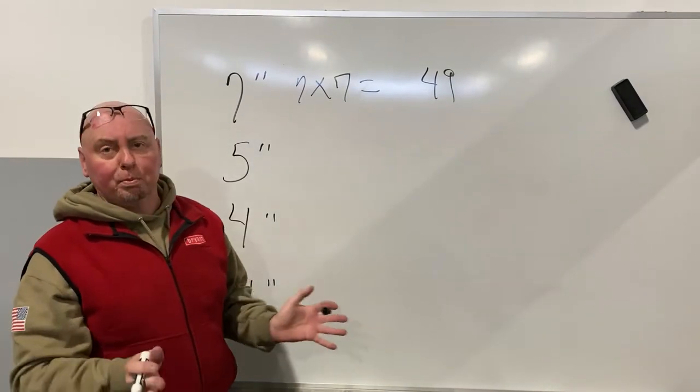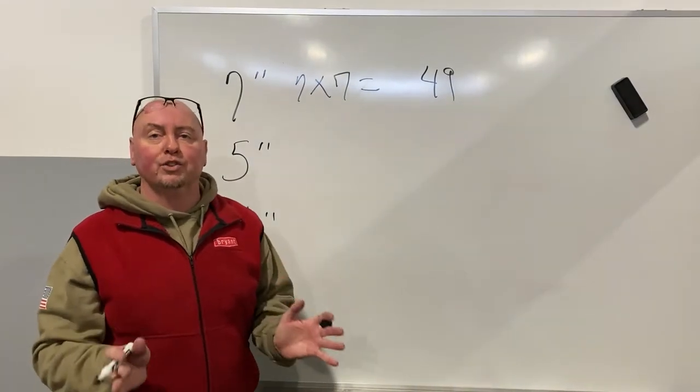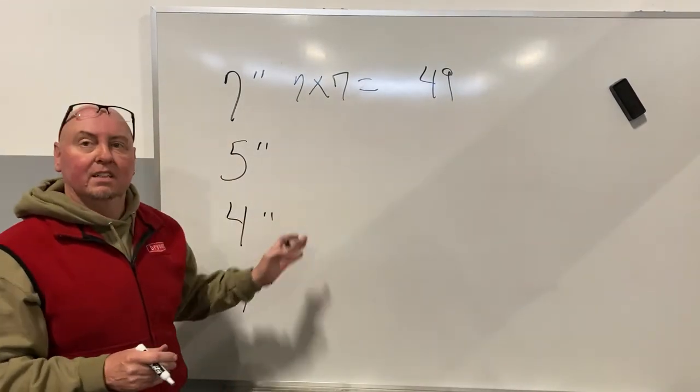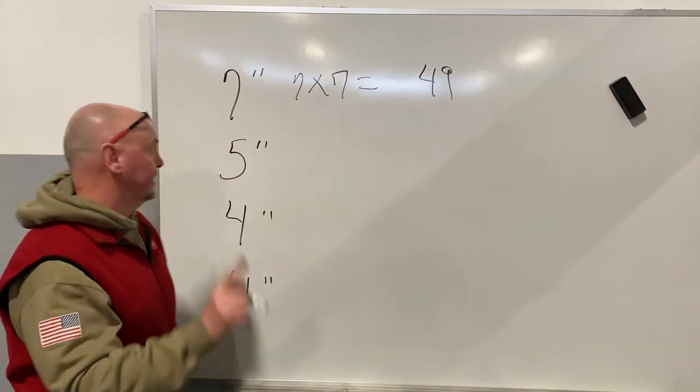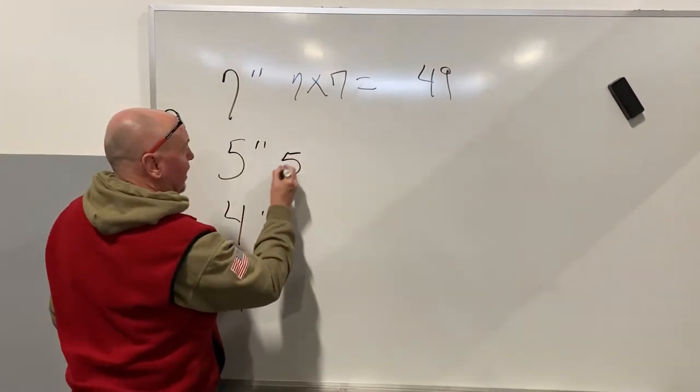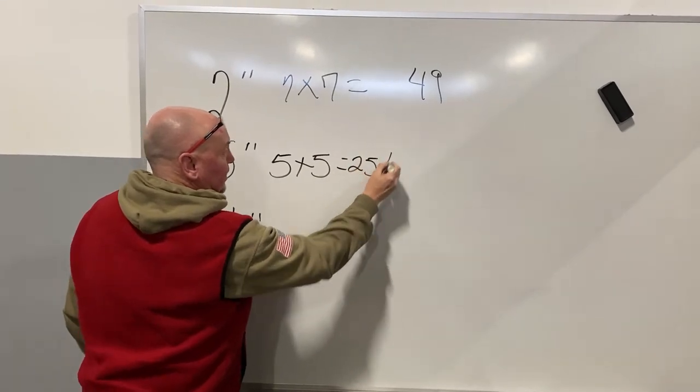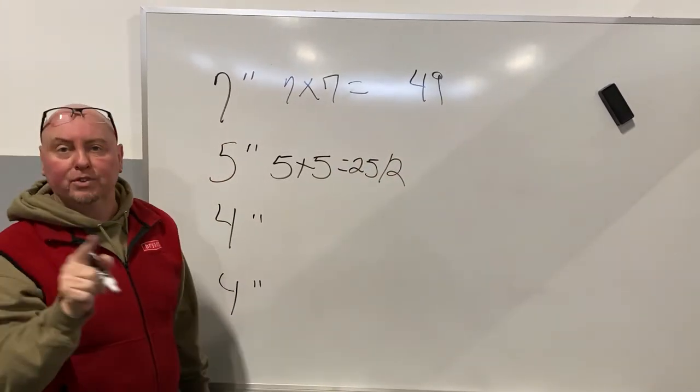You need 100% of that appliance, 100% of the largest appliance. Now here's the 50% rule. The other ones, you take 50%, same formula, 5 times 5 is 25, but divide by 2. I need 50% of that.